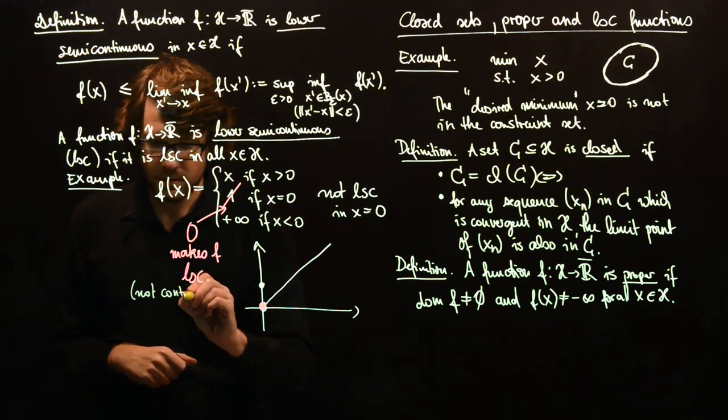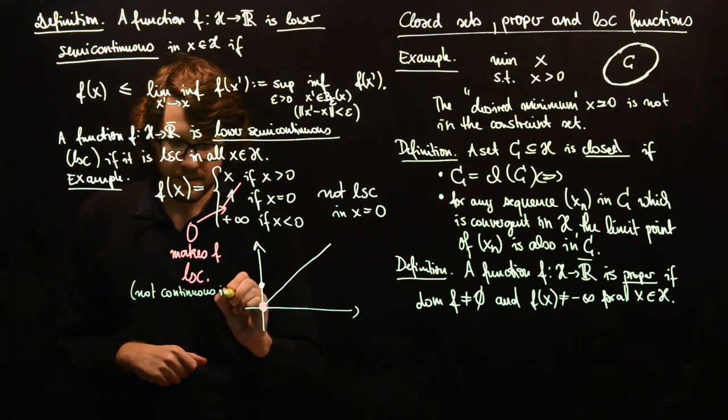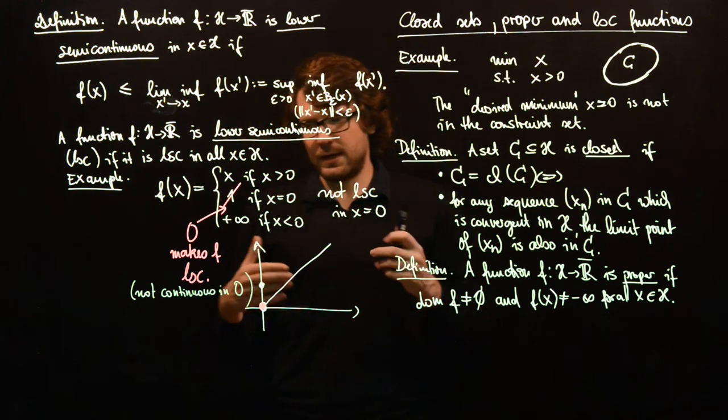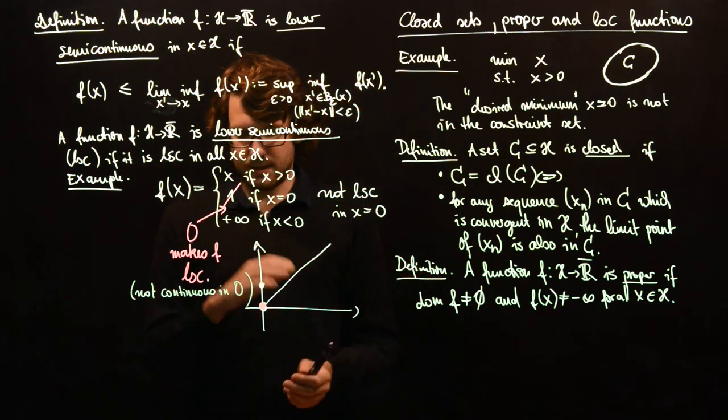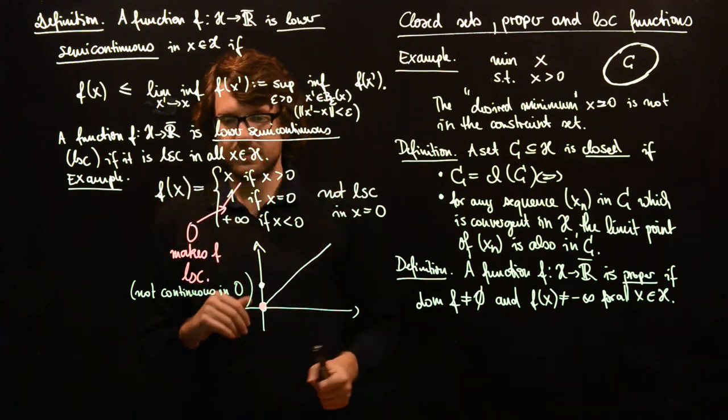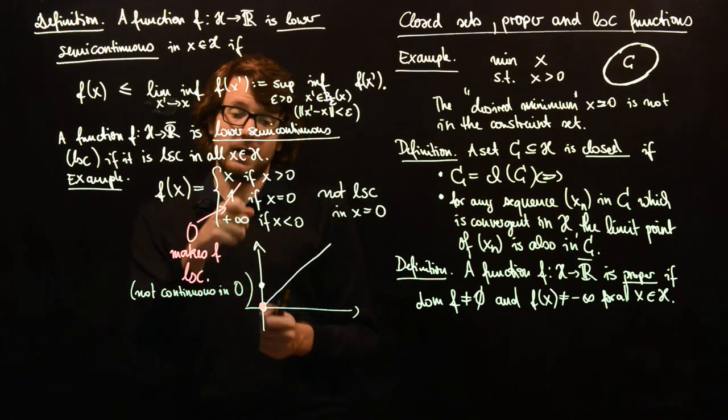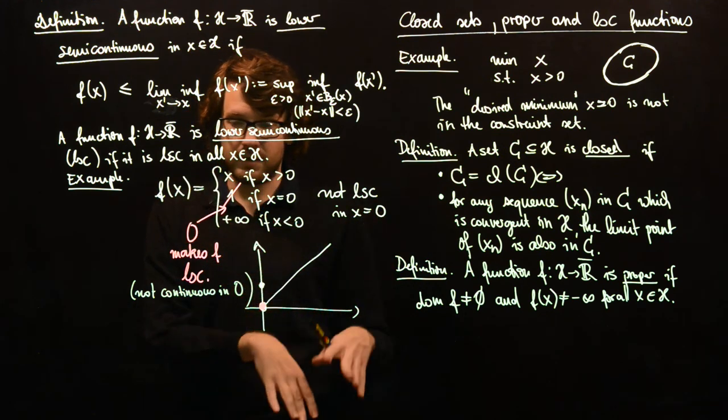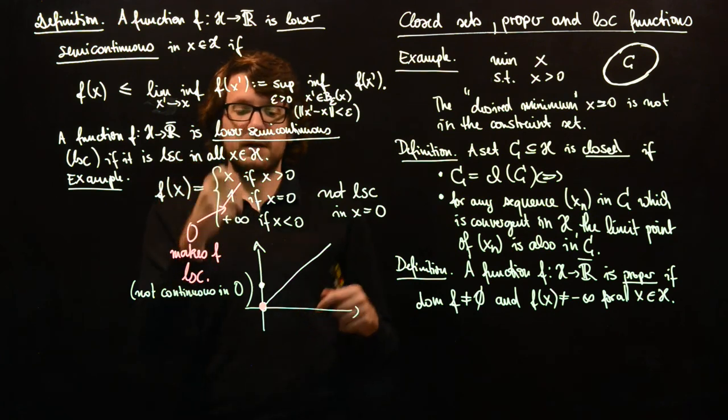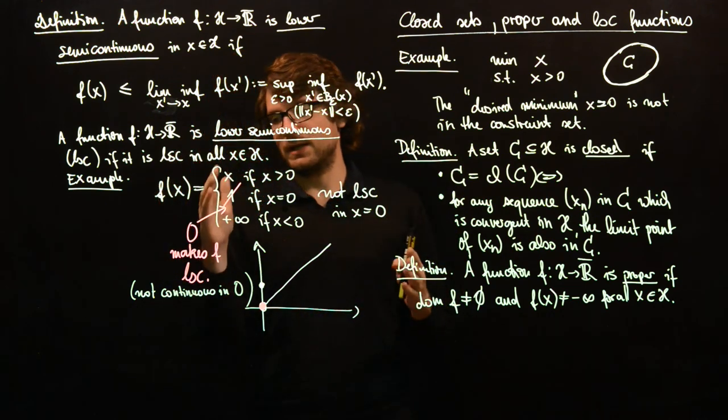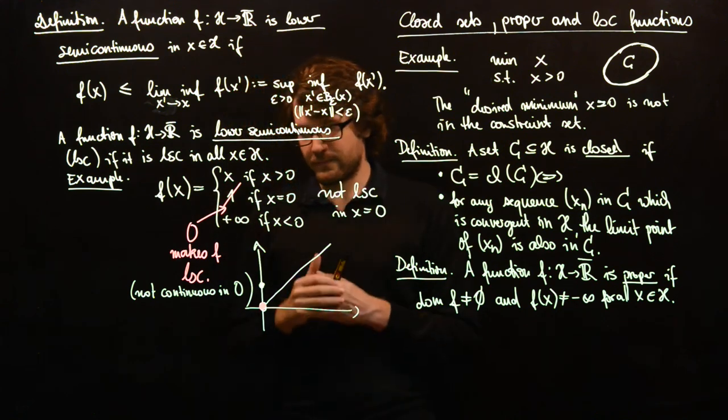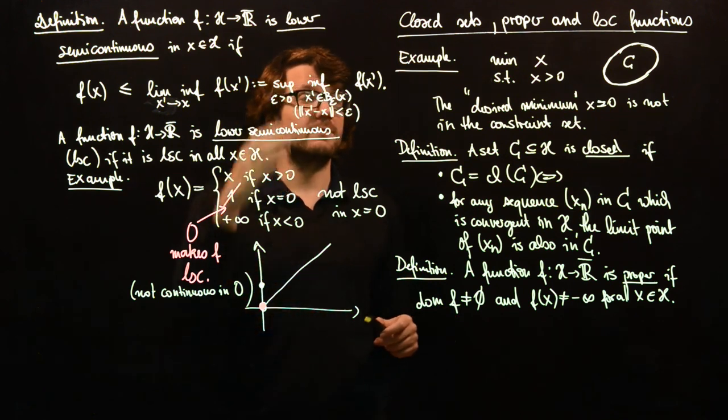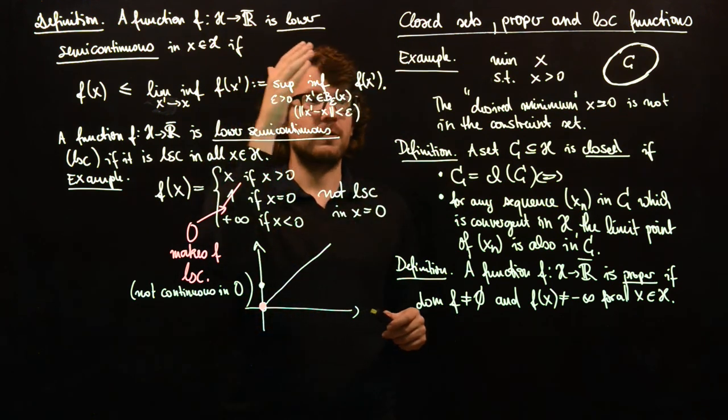That is also a point which we could add. This is not continuous in 0. Since we have said that we want to include constraints in our objective function, then it makes sense to allow plus infinity as values here and allow jumps from something finite to plus infinity, but only if these jumps lead to lower semi-continuous functions.